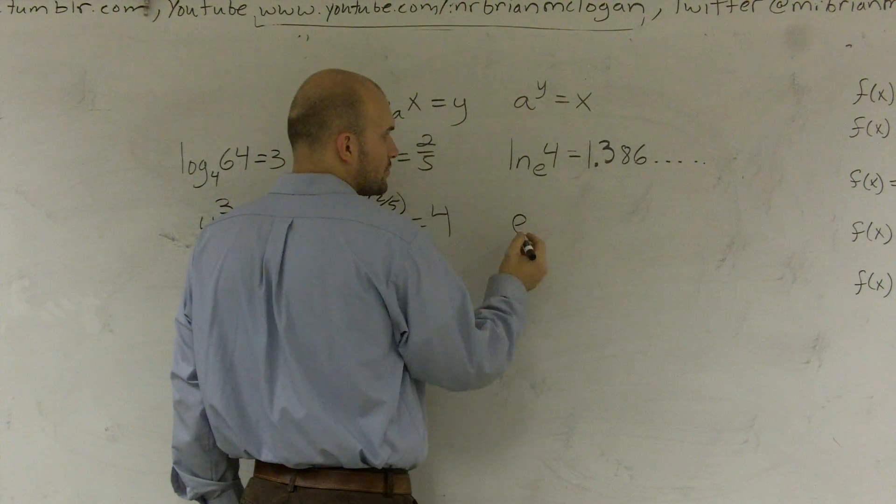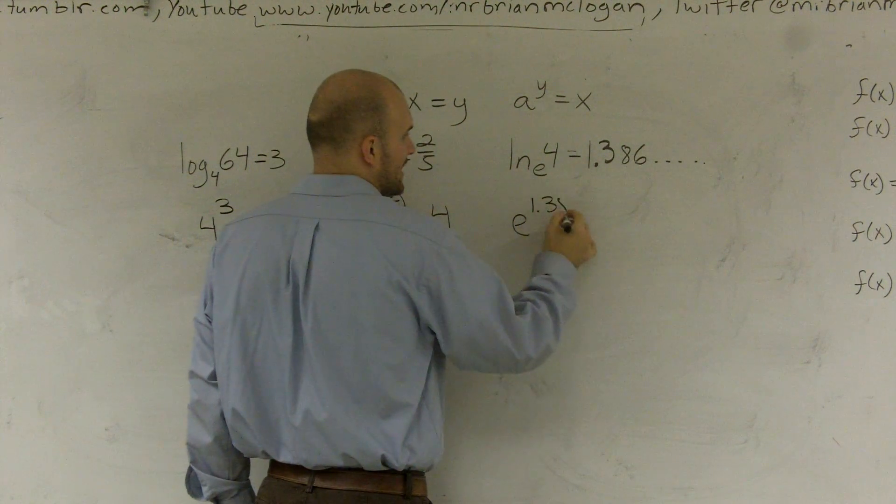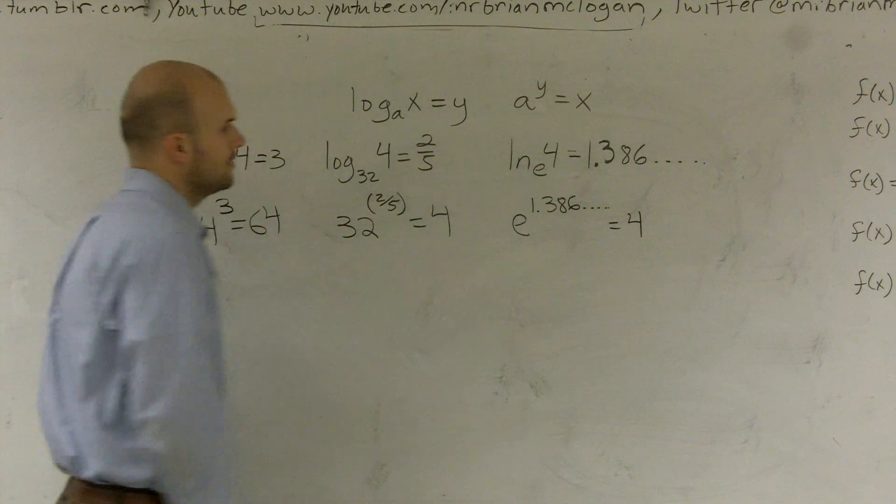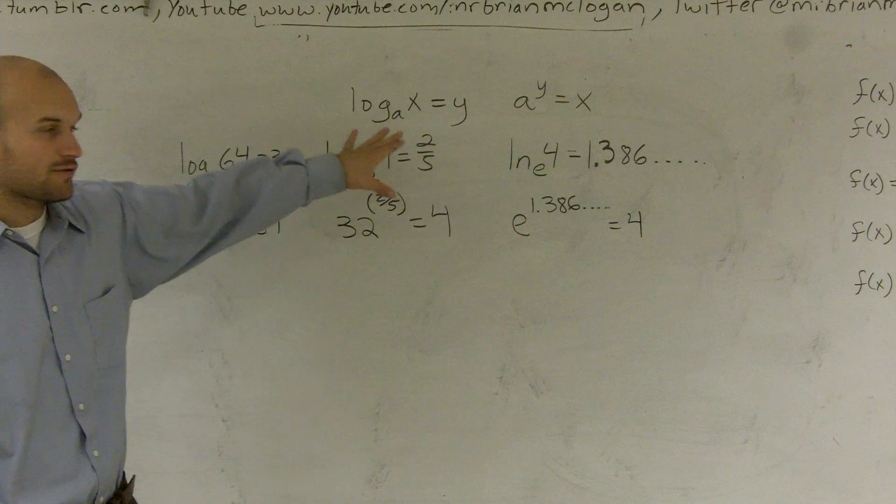e raised to some number equals 4. Well, that's 1.386 dot, dot, dot equals 4. Okay? And that's how you transfer from logarithmic to exponential.